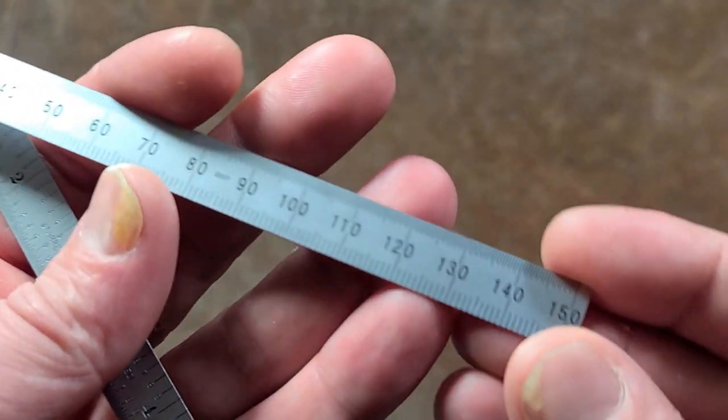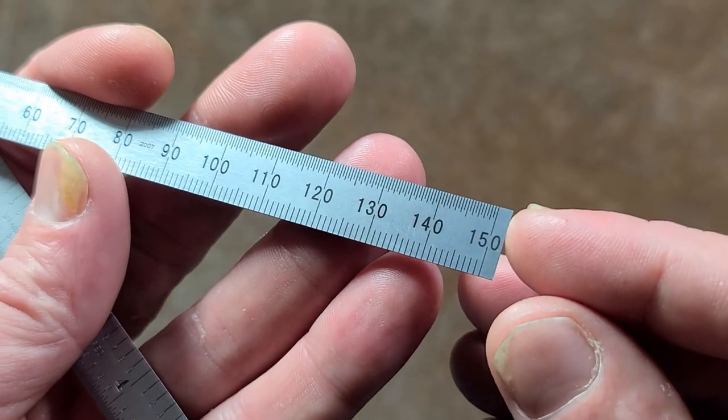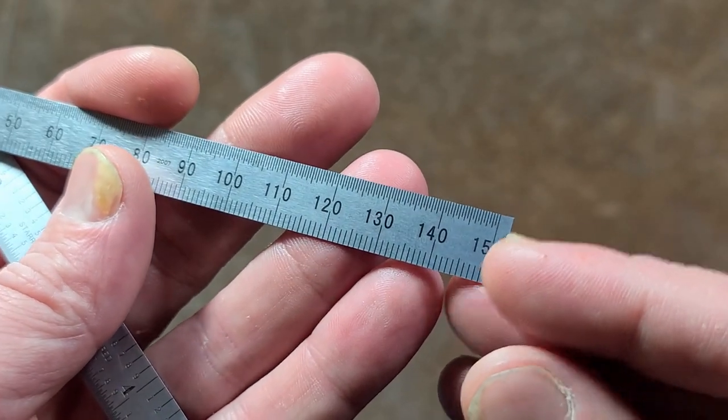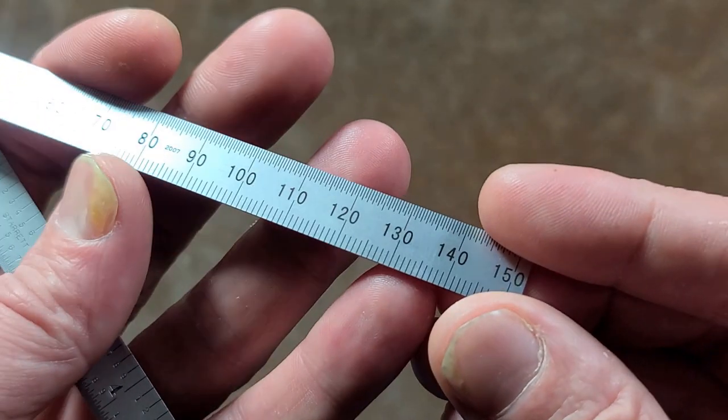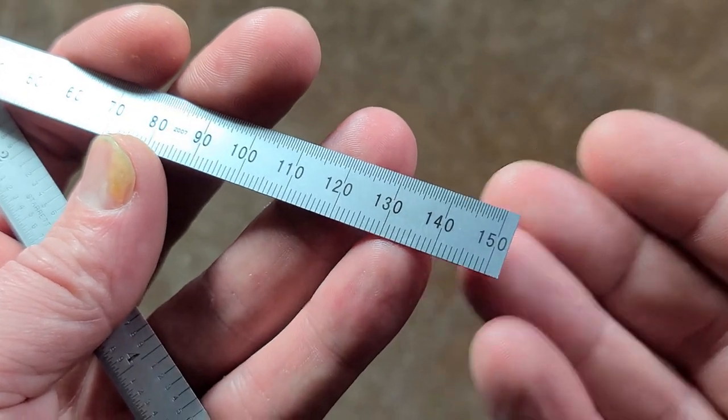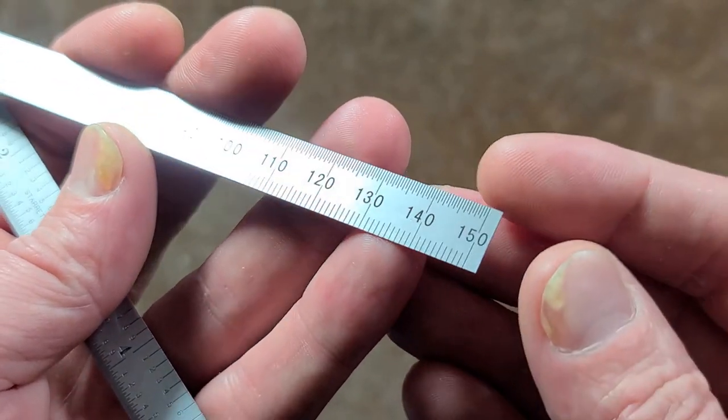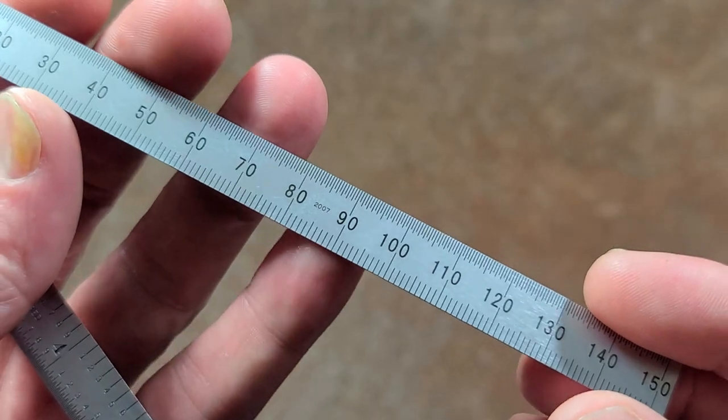I guess the only thing I would mention is they probably should have put a few more tick marks, just because there was more space on the end of the ruler. They didn't have to actually mark that number, but if I was measuring something that was 152 millimeters, you'd have to squeeze that in there. I guess that'd be the only criticism.